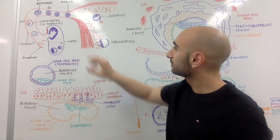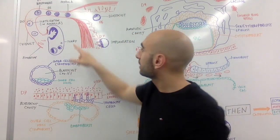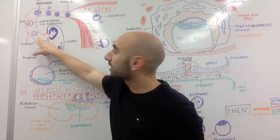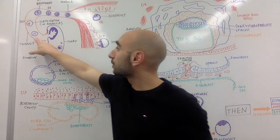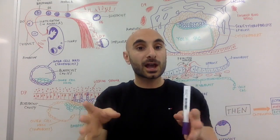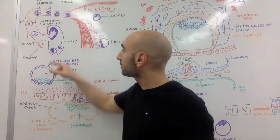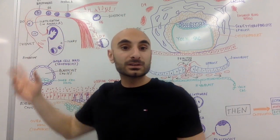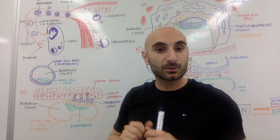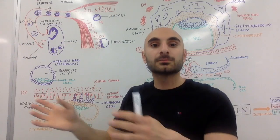What we have here is the uterus, the oviduct, or the uterine tube, and the ovary right here. During ovulation, the secondary oocyte is expelled from the ovary, and the fimbriae — the finger-like projections of the oviduct — suck the oocyte in through the oviduct. The oocyte releases an egg, and the oviduct, the uterine duct, takes the egg.